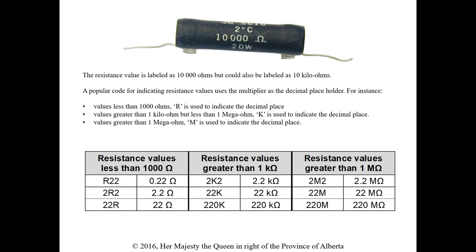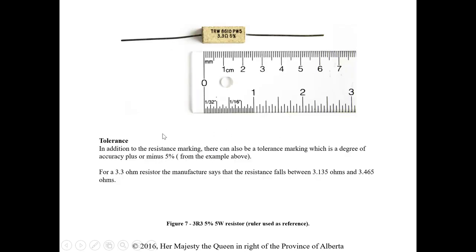For larger resistors, the resistance value can be listed right on the resistor itself. For example, 10,000 ohms, 20 watts. There's also a shorthand: values less than 1,000 ohms use R to indicate the decimal place — so R22 is 0.22, and 2R2 is 2.2. Between 1 kΩ and 1 MΩ, K is used in place of the decimal. Greater than 1 MΩ, M is used instead. This is just another way to keep shorthand on the resistor when there's not a lot of physical room.